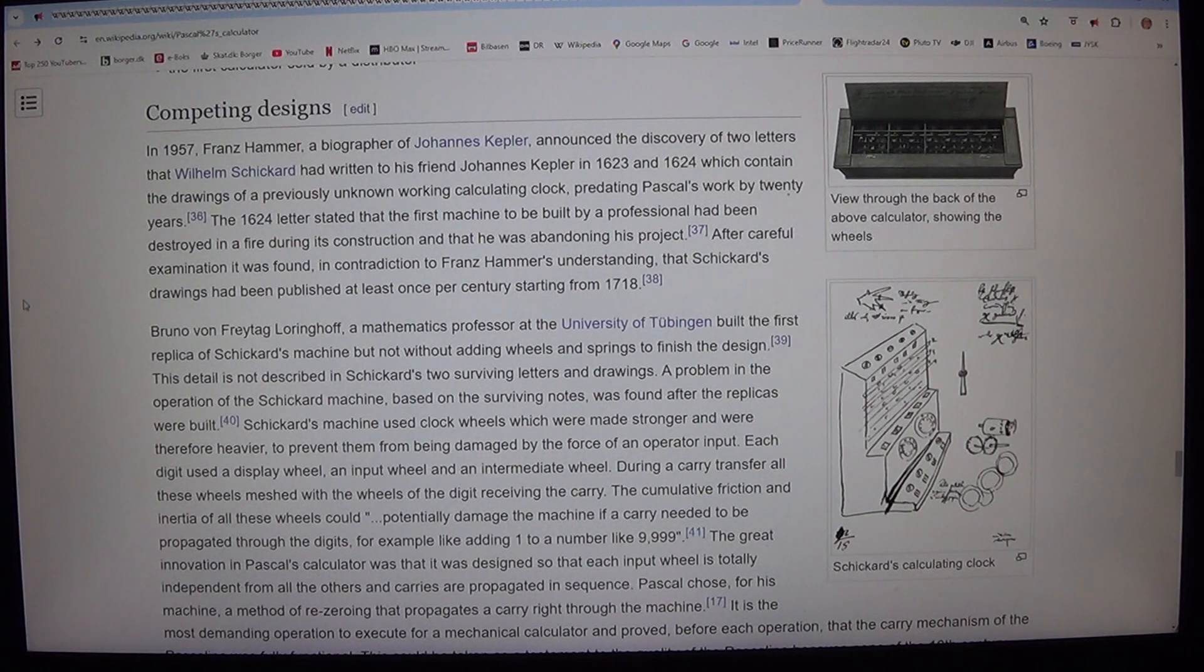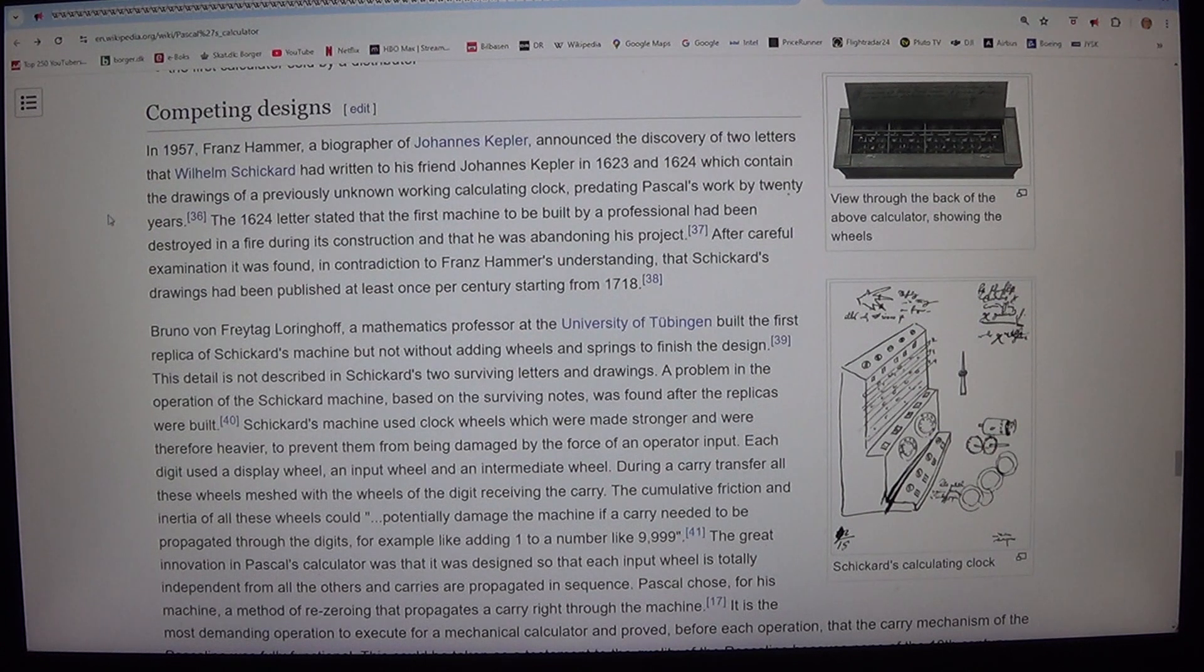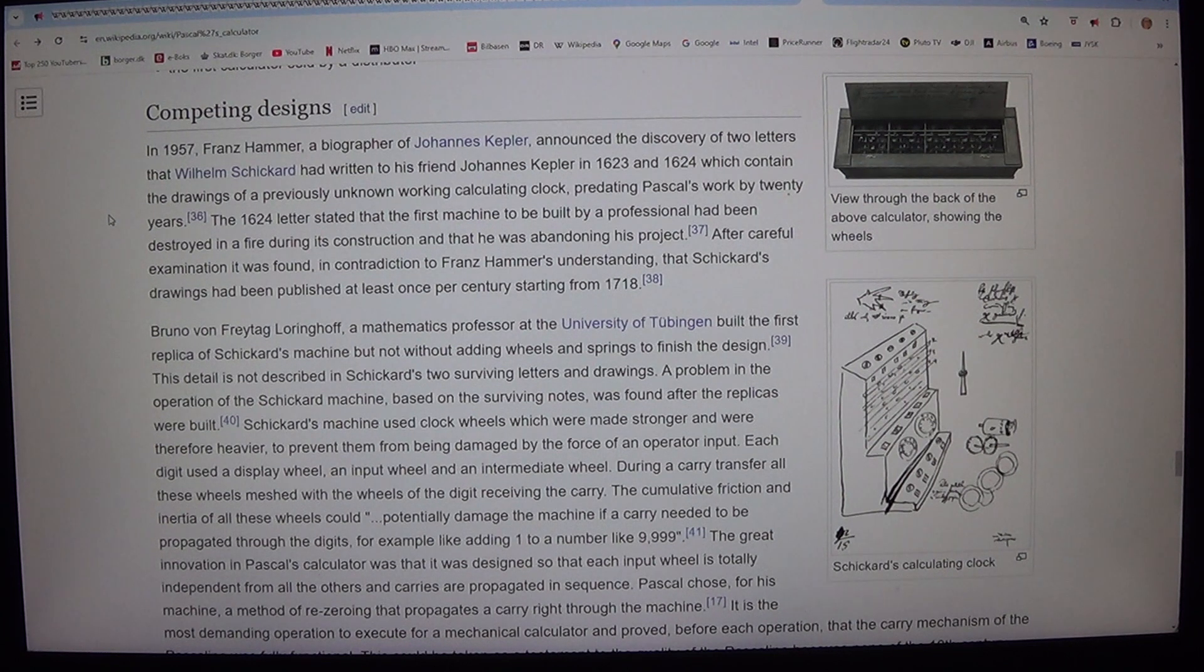Competing designs. In 1957, Franz Hammer, a biographer of Johannes Kepler, announced the discovery of two letters that Wilhelm Schickardt had written to his friend Johannes Kepler in 1623 and 1624 which contain the drawings of a previously unknown working calculating clock, predating Pascal's work by 20 years. The 1624 letter stated that the first machine to be built by a professional had been destroyed in a fire during its construction and that he was abandoning his project. After careful examination it was found, in contradiction to Franz Hammer's understanding, that Schickardt's drawings had been published at least once per century starting from 1718.